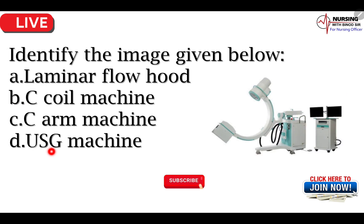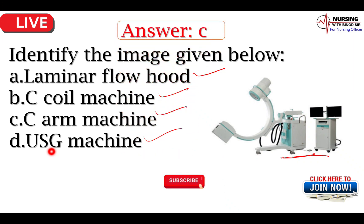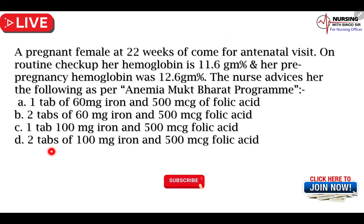Identify the image given below। यह image को आप लोग identify करो — जरूर इसका नाम बताओ। Options: laminar flow hood, C-coil machine, C-arm machine, USG machine। Answer हो जाएगा C option — C-arm machine।